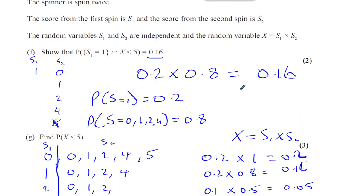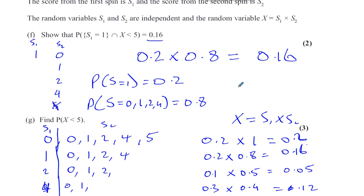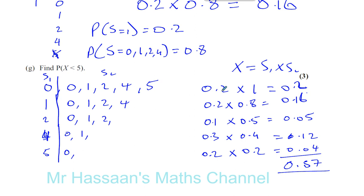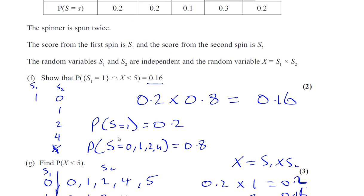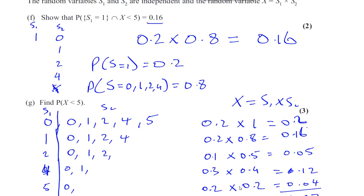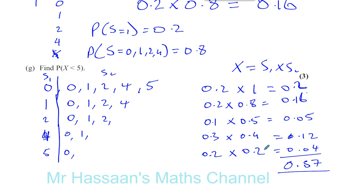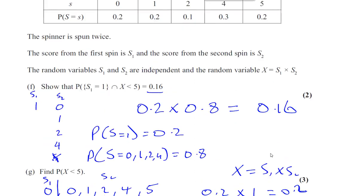That's the most straightforward way to do the question. There's also an alternative approach — thinking of all the ways of getting 5 or more, and then doing 1 minus that. Let's see if that gives the same answer.